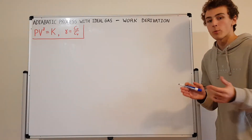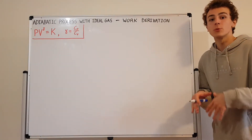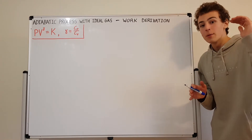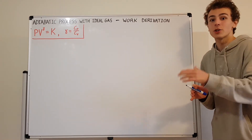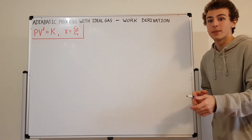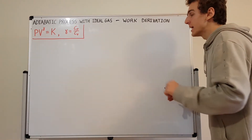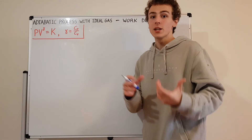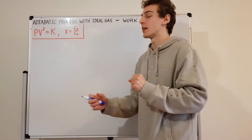What we're going to do is take the integral of P as a function of V, and we're going to integrate that between the bounds of the initial volume and the final volume.